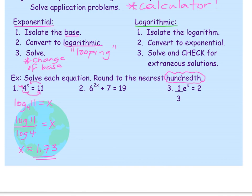Problem two: 6 to the 2x power plus 7 equals 19. Step one, isolate the base. The exponent has a 2 in front, but the base is 6. To move the 7 over, subtract it. That gives us 6 to the 2x power equals 12. Be careful — 6 and 12 are not power-chart friendly, even though 6 goes into 12 twice. We can't raise 6 to an integer power to get 12, so we do the looping for the next step.